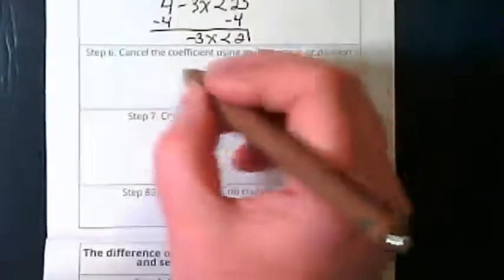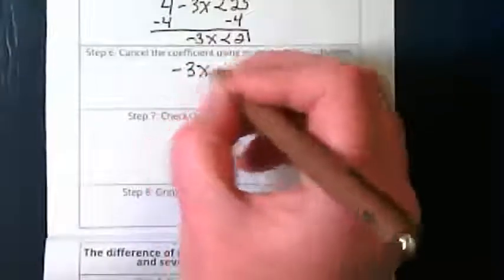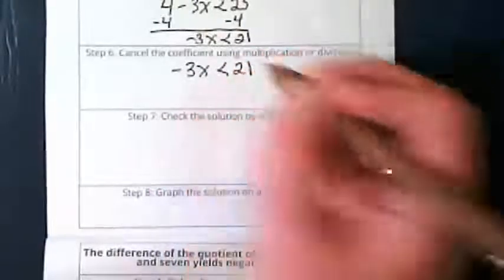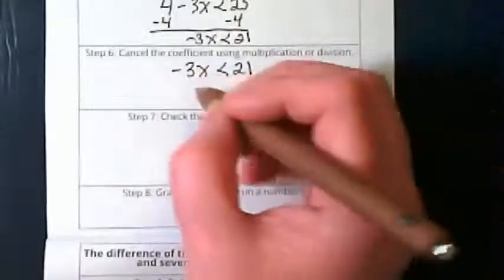I'm going to cancel the coefficient. Negative 3x is less than 21. What am I going to do to cancel the coefficient?